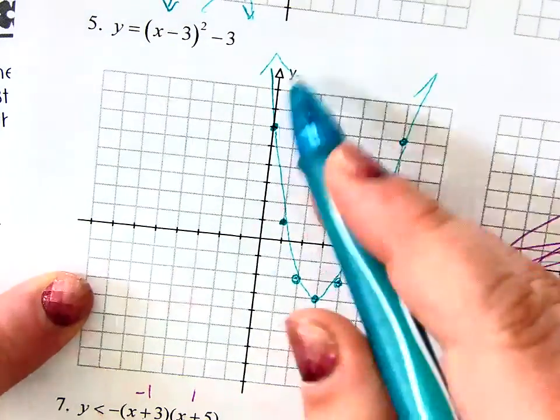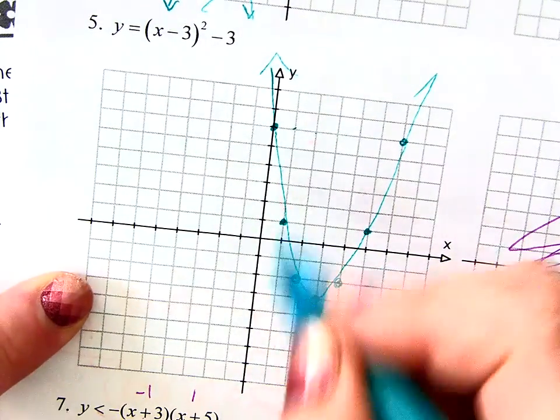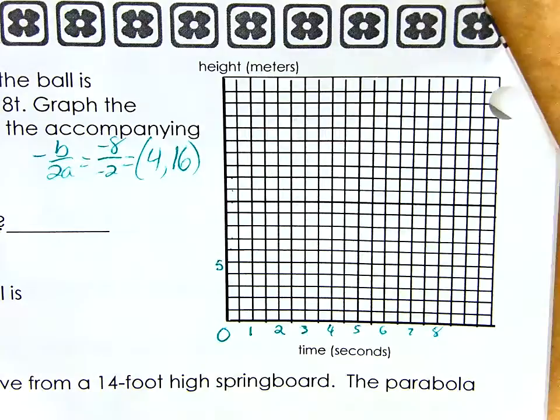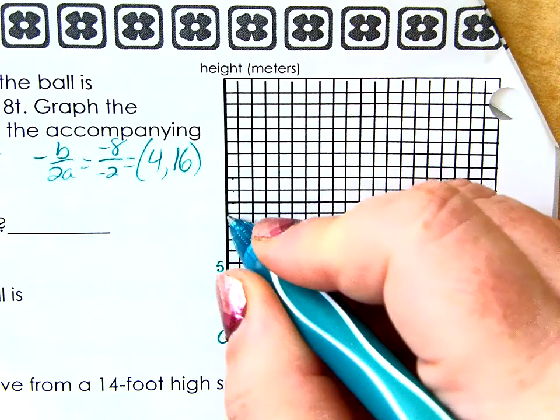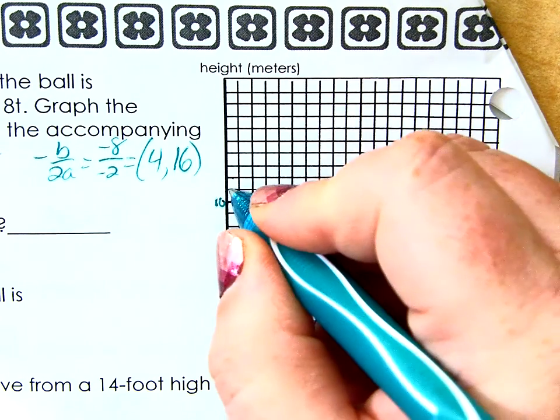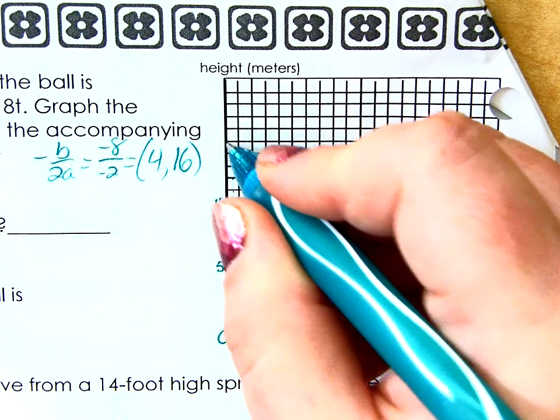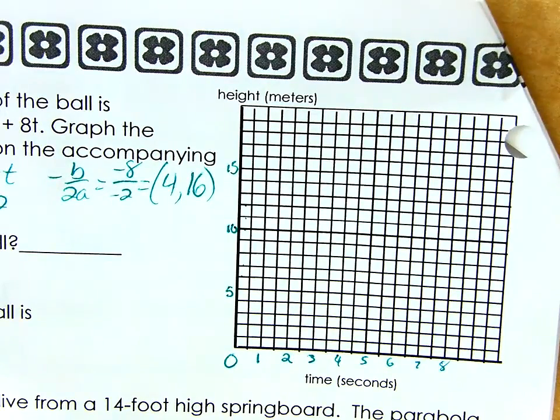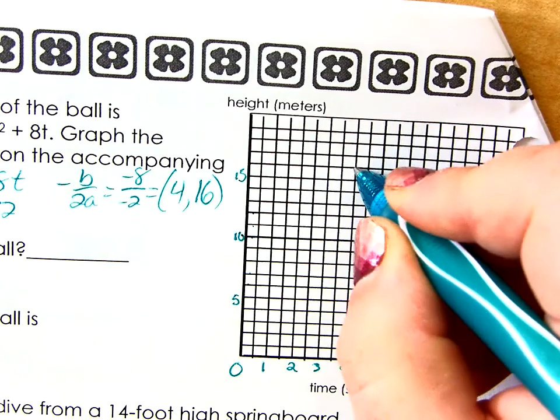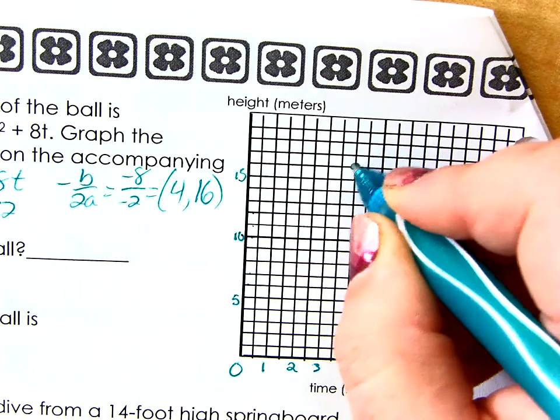6, 7, 8, 9, 10, 11, 12, 13, 14. Okay. So, let's go ahead and put a dot at 4, 16. There is my vertex.